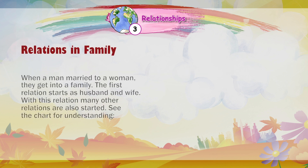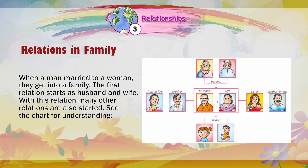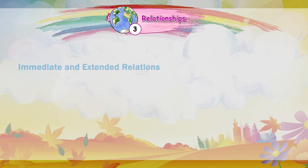When a man married to a woman, they get into a family. The first relation starts as a husband and wife. With this relation, many other relations are also started. See the chart for understanding. Immediate and extended relations.